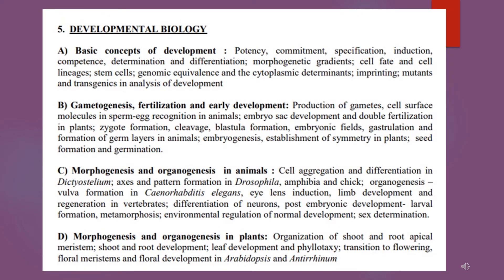The fifth unit is Developmental Biology, and it is among the most important units for the CSIR exam. Questions from some topics are always asked in CSIR in one form or the other. Moreover, there is a famous book — Developmental Biology by Gilbert — which is more than enough for its preparation. You just need that single book. So prepare this unit very nicely to score well in CSIR.